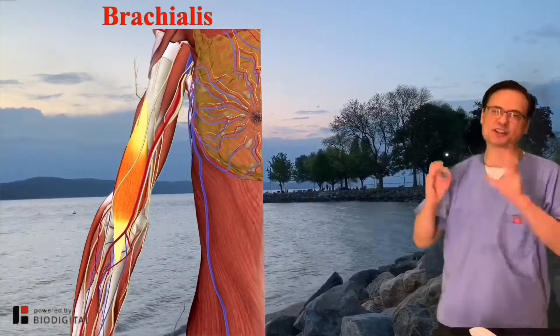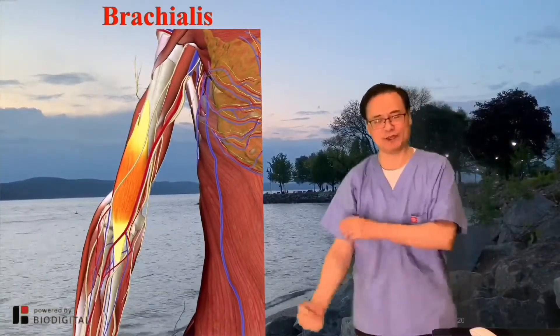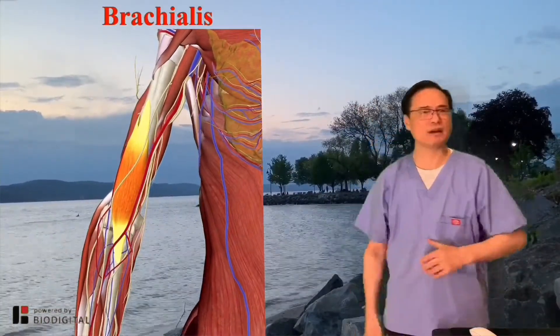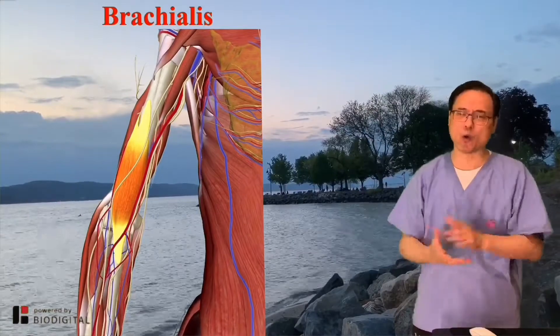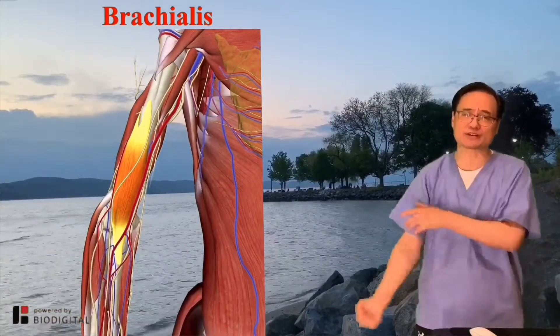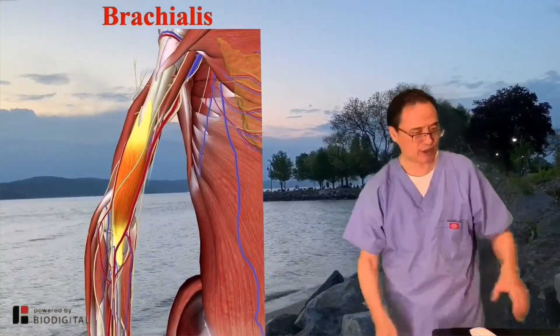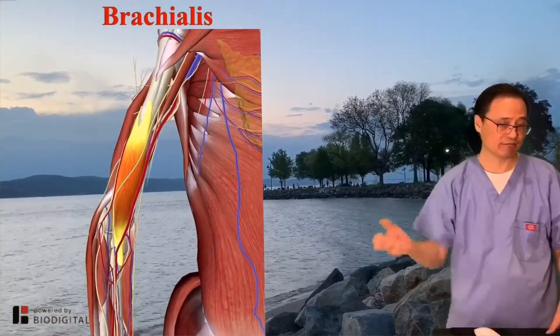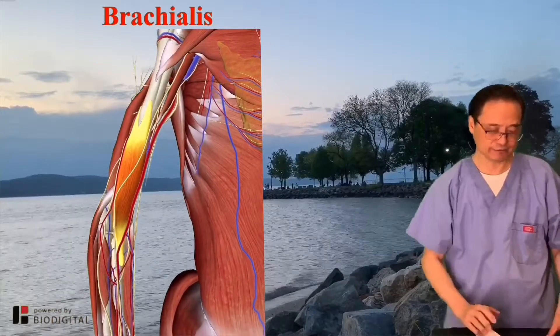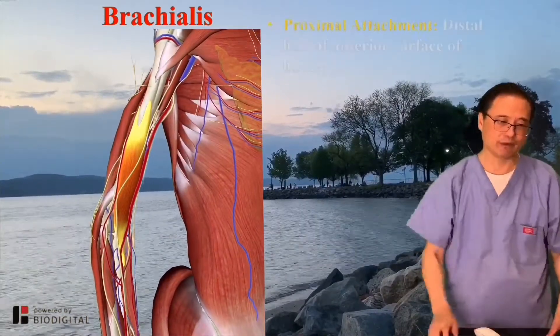This is the powerful flexor of the elbow. Whenever you're going to ask which muscle is the most important flexor, it is brachialis — the flexor of the arm.